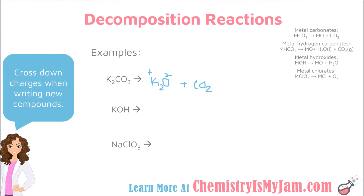Our second example is potassium hydroxide. So I am going to go to the rule about the hydroxides. A metal hydroxide is going to break apart into a metal oxide plus water. So this time my metal is potassium, and it is going to form potassium oxide plus water. Keep in mind, every time you form a compound you want to check your charges. Potassium is plus 1 and oxygen is minus 2, so you want to cross those down to get K2O.